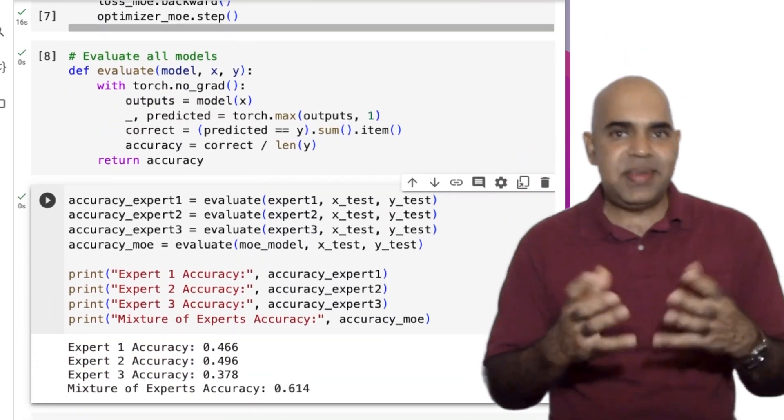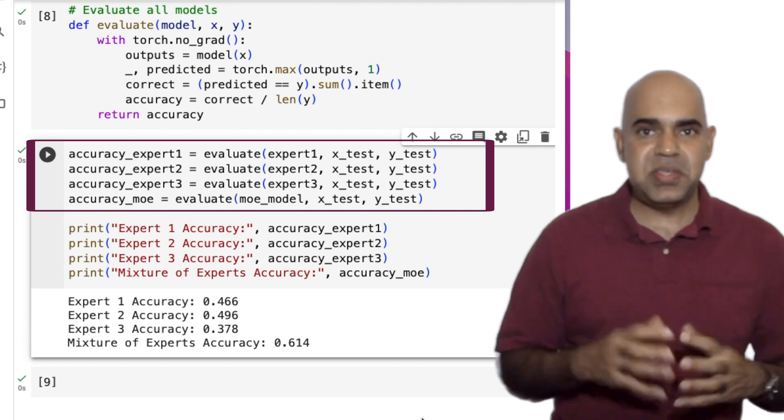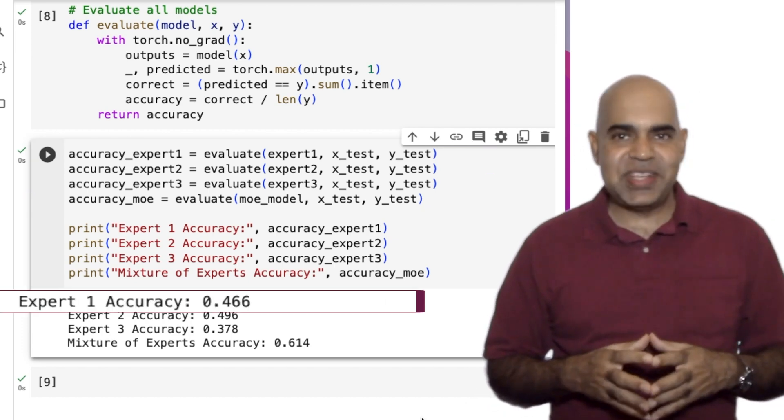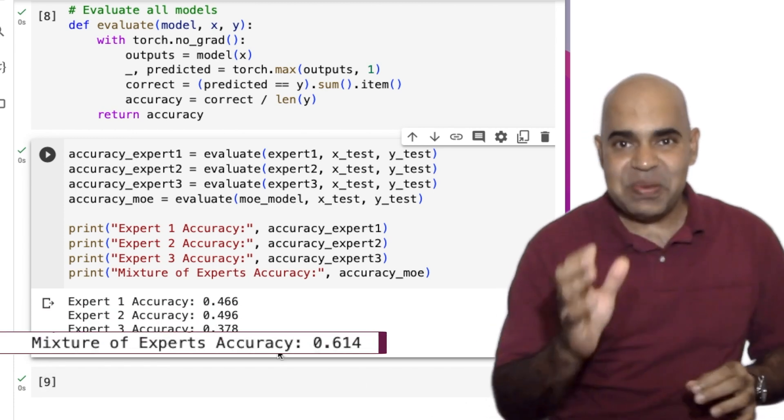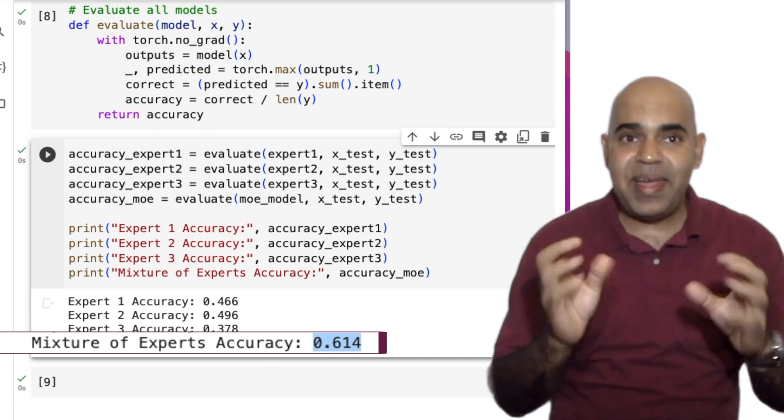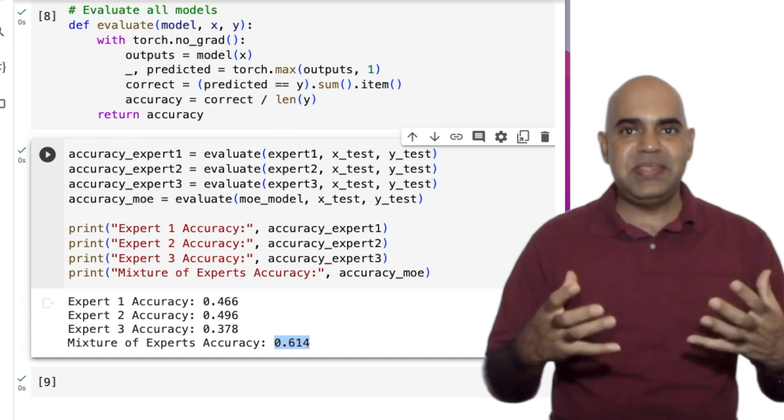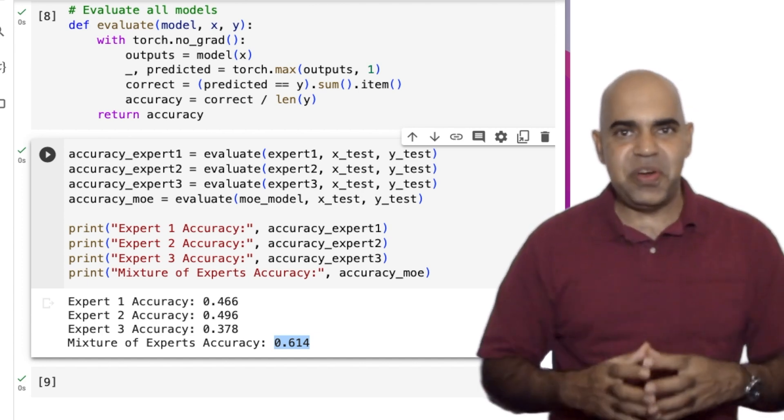Now the testing part. The testing is done with data that none of the neural networks saw before, obviously. Notice the accuracy for expert 1, expert 2, expert 3, and the mixture of experts. The mixture of experts has the highest accuracy. The mixture of experts tried to best utilize the three experts and performed the best.